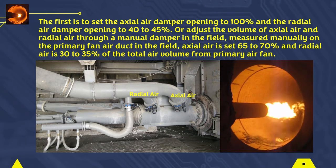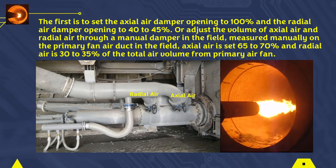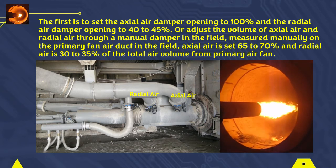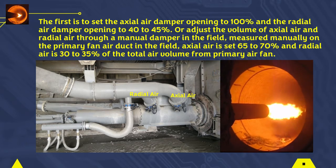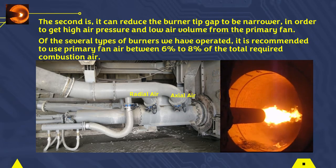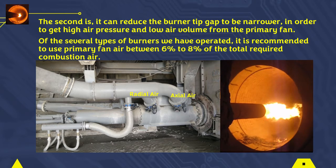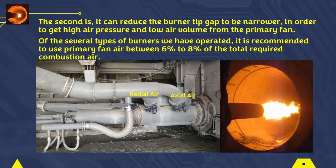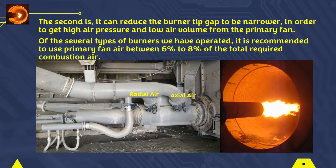The second step is to reduce the burner tip gap to be narrower, in order to get high air pressure and low air volume from the primary fan. Of the several types of burners operated, it is recommended to use primary fan air between 6% to 8% of the total required combustion air.